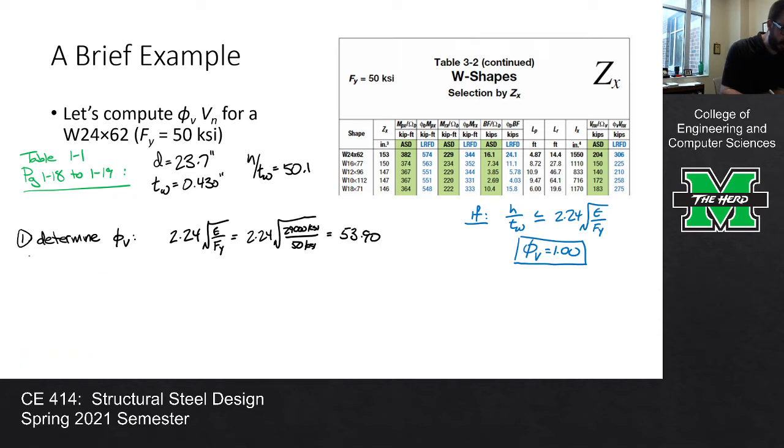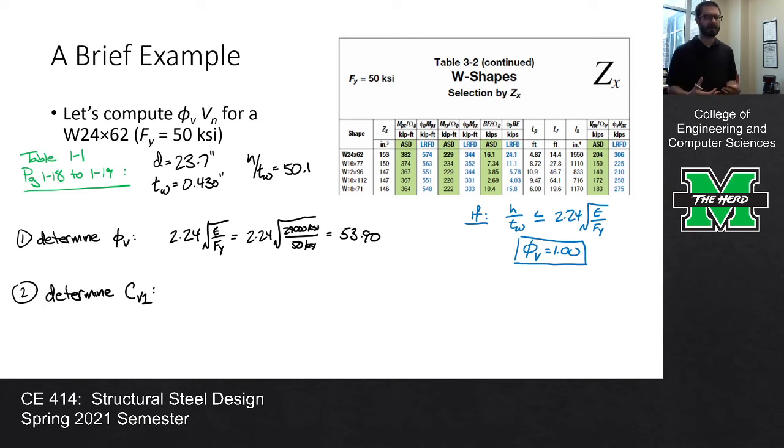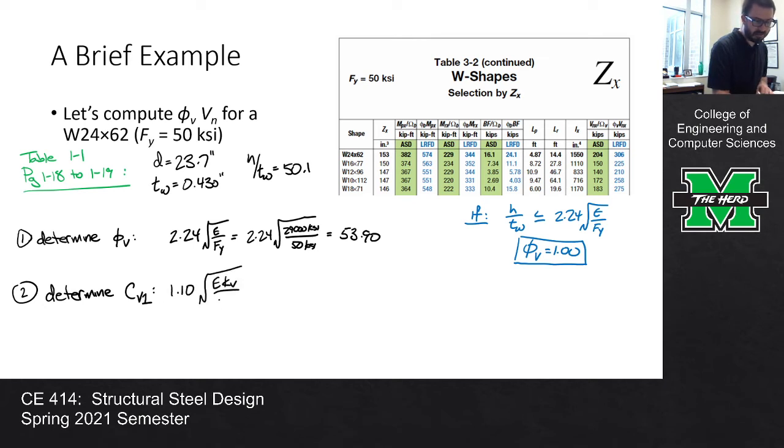So from that we need to determine our CV or CV one. The reason why there's a CV one is because there's also a CV two related to another phenomenon in a spec called tension field action, but that's another story for another day. And that's something that's really only applicable to plate girder sections. First off, to be clear for all W shapes of 50 KSI, this value is one, but if you want to actually go through the motions of checking it, what you do is you, first off, let me open my spec to make sure I get the formula correct. I believe it's 1.10 E K V over F Y.